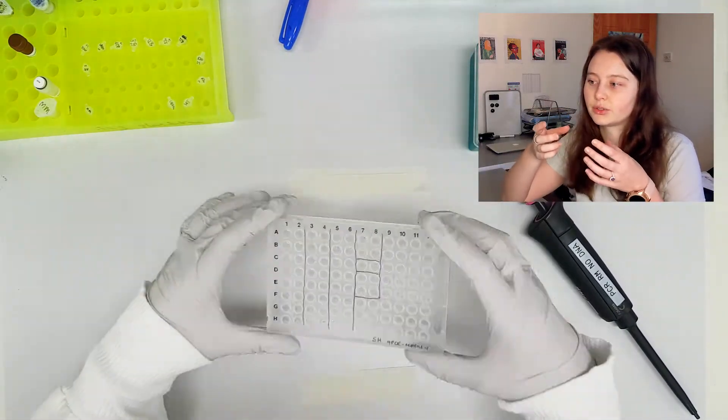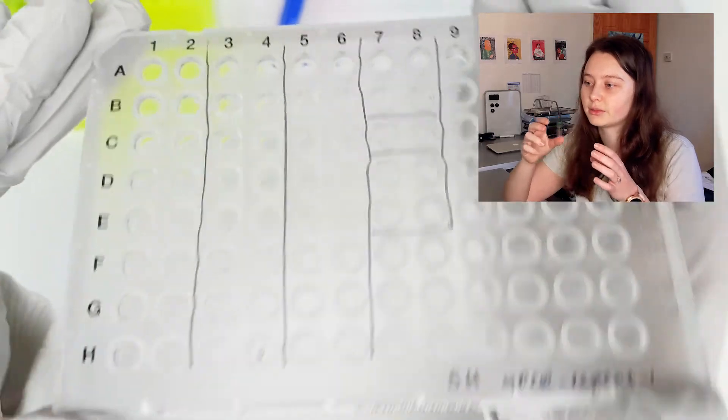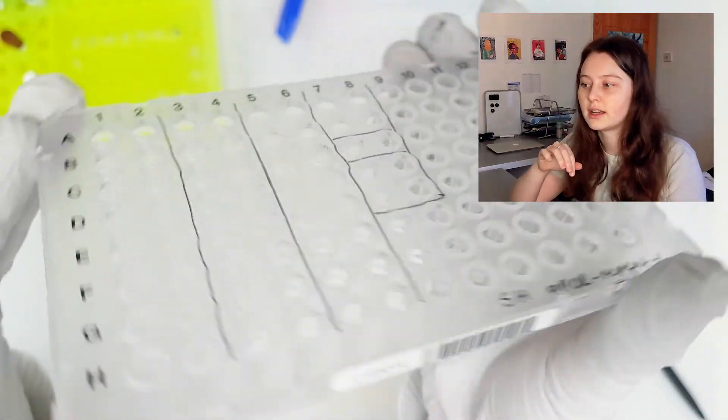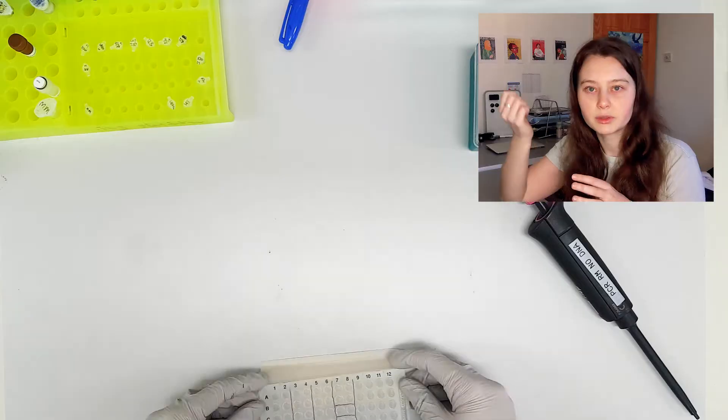So now I'm just checking to make sure that I got all the liquid inside, so I'm just having a quick look around, make sure there's liquid in the right wells, and that there's none up on the side, which would mean that I missed.